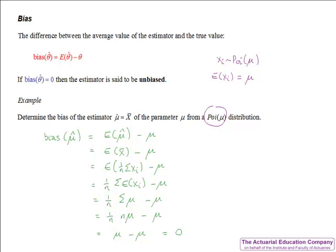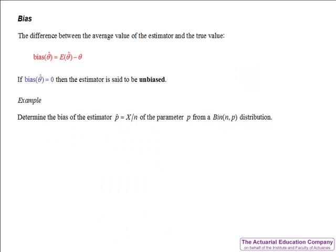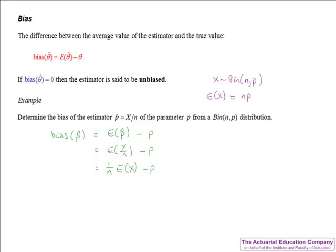Let's take a look at a different example. Here we determine the bias of the estimator p hat equal to x over n of the parameter p from a Binomial(n, p) distribution. Using the formula, the bias of p hat equals the expectation of p hat take away p. Since n is a constant we take it outside the expectation. Since we're sampling from a binomial distribution, x has a Binomial(n, p) distribution, so E(x) equals np. Substituting gives 1 over n times np minus p, which is p minus p, which is 0. So this estimator is unbiased for p — on average it gives the true value of p.